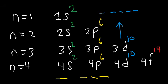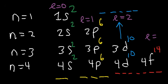F can hold up to 14 electrons, and F has seven orbitals. So those are some things you want to keep in mind. By the way, whenever you have the S sublevel, L is equal to zero. For the P sublevel, L is equal to one. For D, L is equal to two. And for F, L is equal to three.